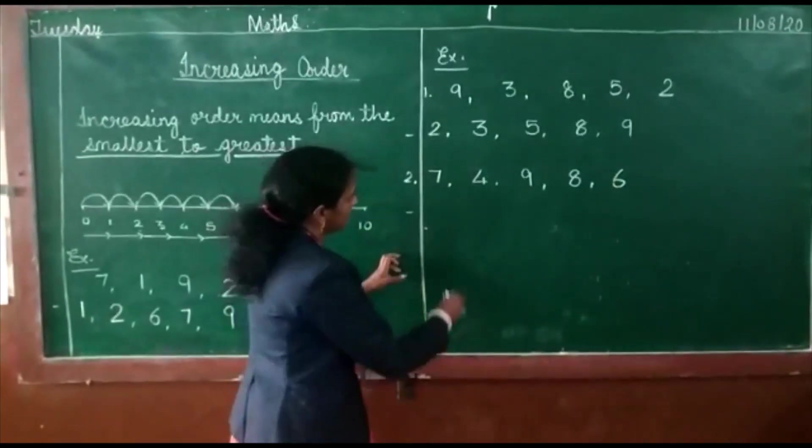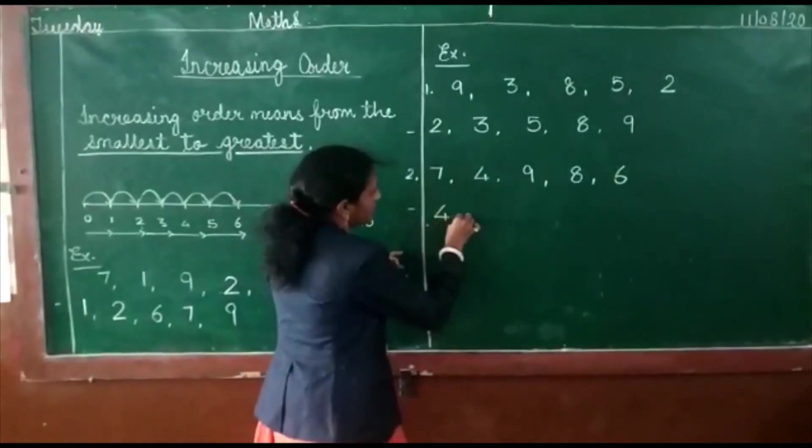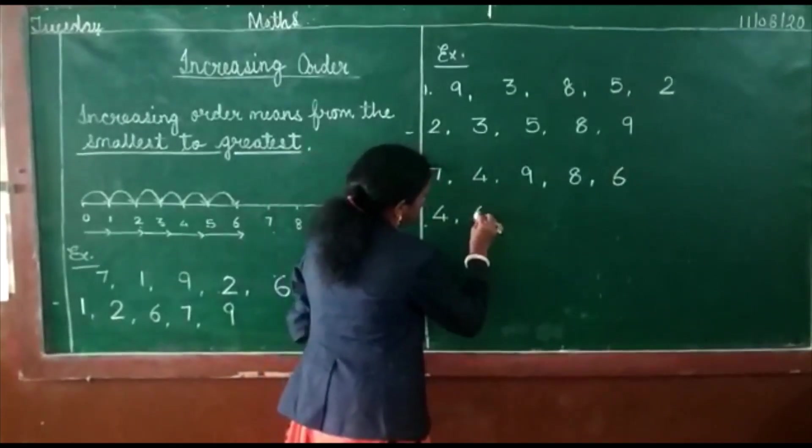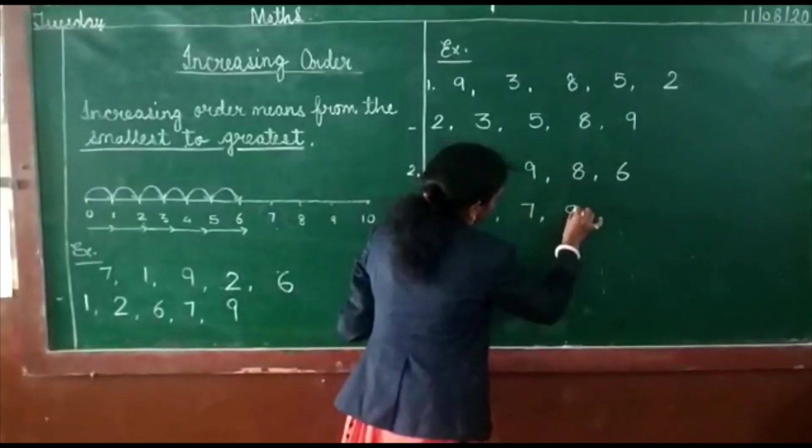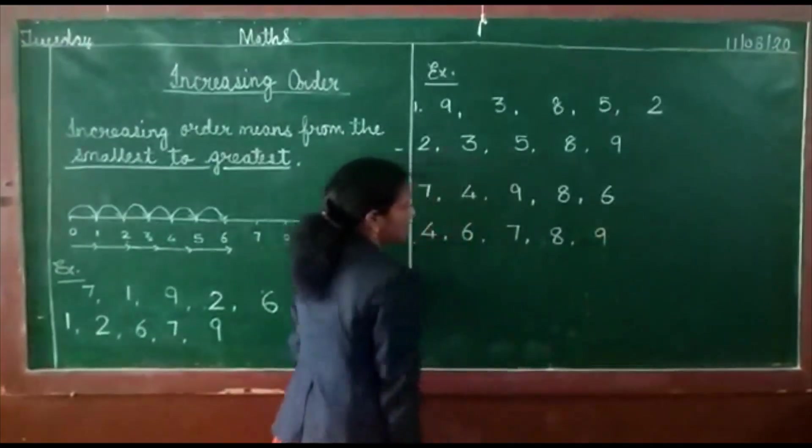Smallest number is here, four. Then six, seven, eight, nine.